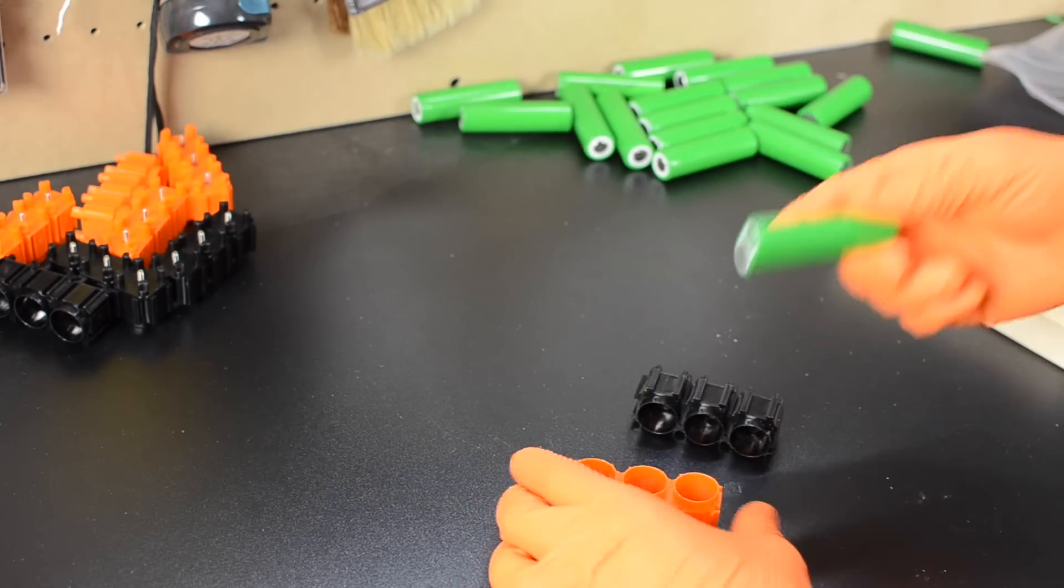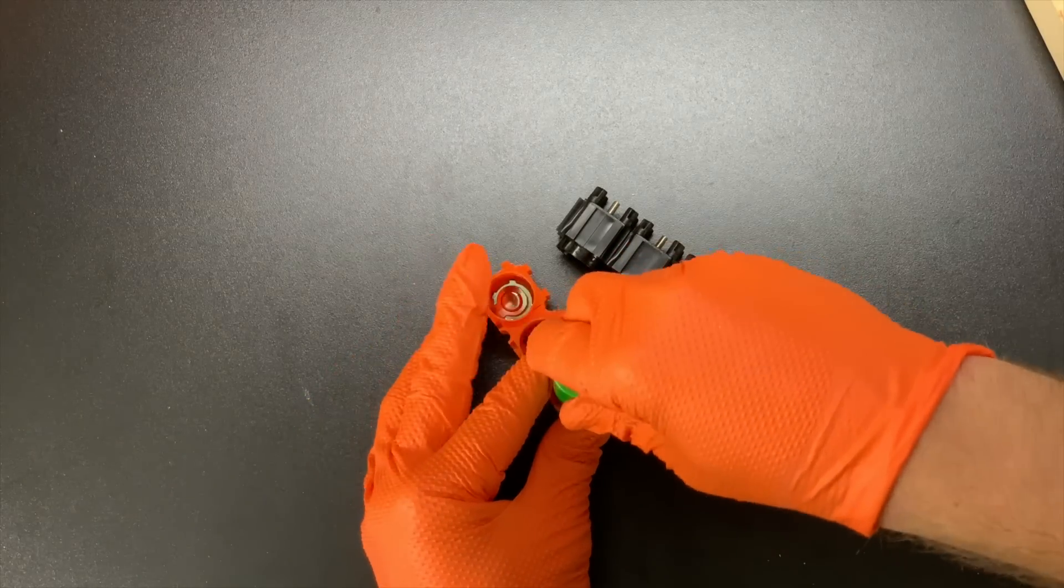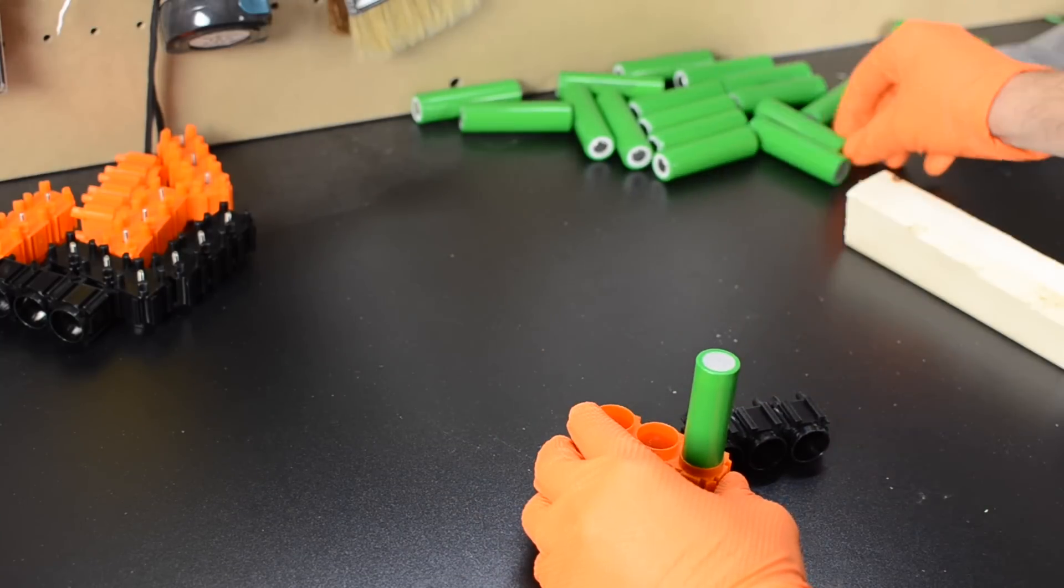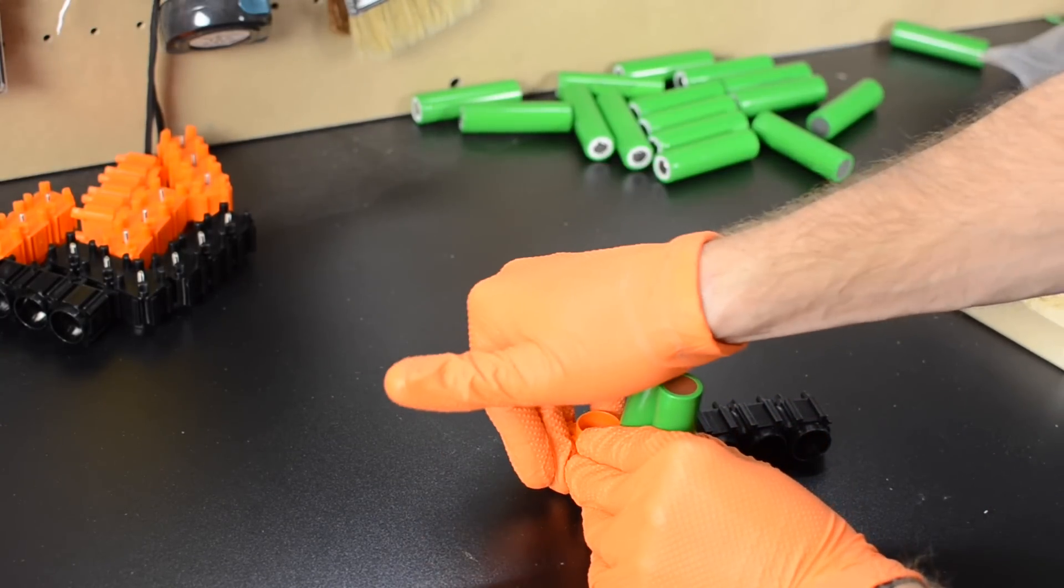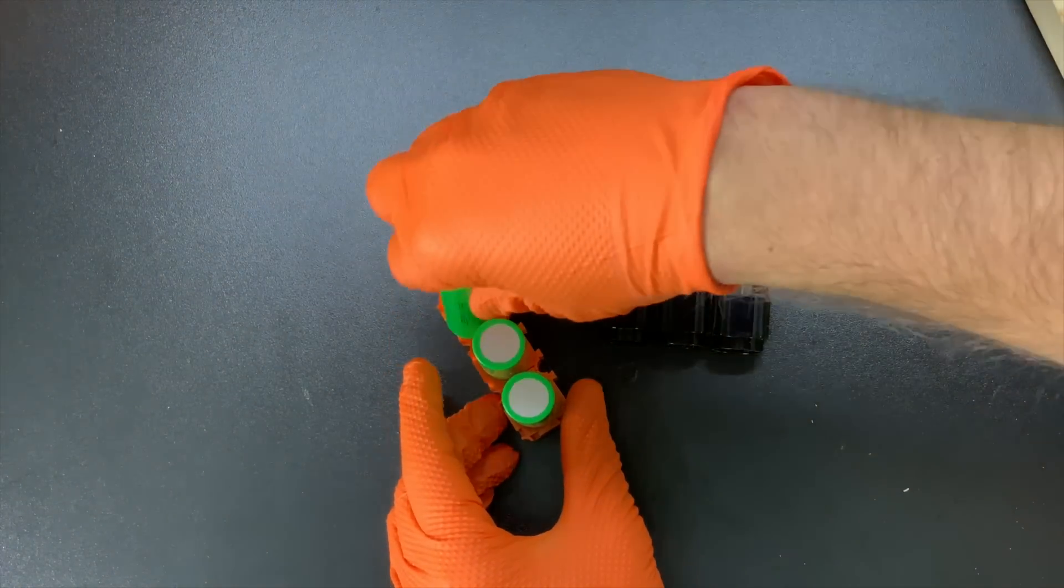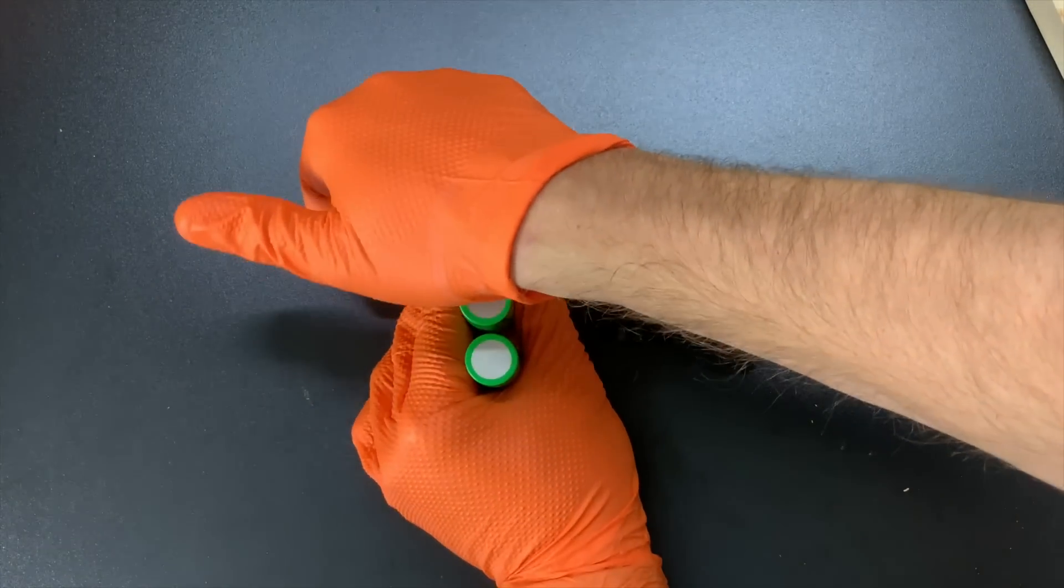Now I'll load my first three cells in. Again, I'm doing three cell parallel groups here, which will give me 10 amp hours, but you can do as many cells in parallel as you want. The positive end will go in the orange side, of course, and I'll put all three cells in and just use my hand strength to push them in one at a time.